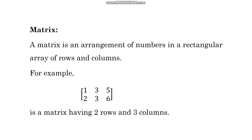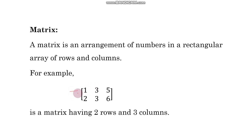We can define a matrix as an arrangement of numbers in a rectangular area of rows and columns. It means it is two-dimensional. Take the example of this arrangement of six numbers — here two rows and three columns are there. So you can say this is a matrix having two rows and three columns.